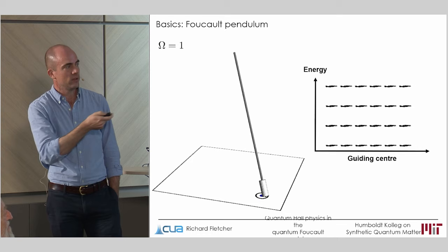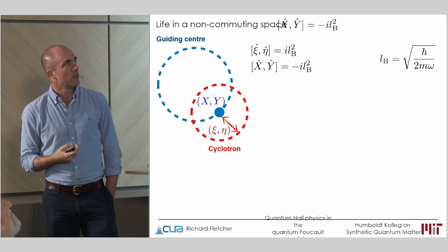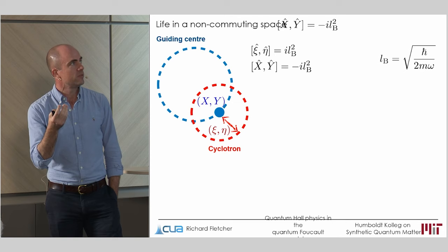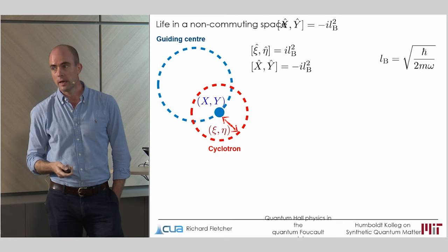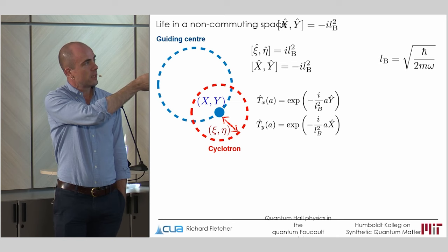And so as everyone knows and learns as an undergraduate, you know that the operators corresponding to the conjugate phase space variables of a harmonic oscillator form a non-commuting pair. And so we therefore infer that the cyclotron coordinates psi and eta form a non-commuting pair, and the guiding center coordinates x and y form a non-commuting pair. And a consequence of that is that the generator of x translations is now y, and the generator of y translations is x.